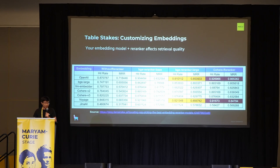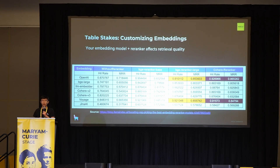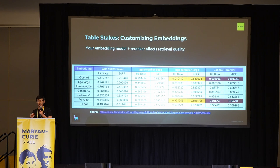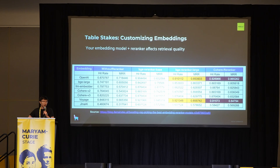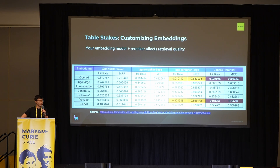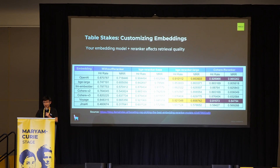Customizing embeddings also matters quite a bit. There's a lot of embedding models out there: OpenAI, BGE, Cohere, Voyage, Gina — a lot of these came out last week or two weeks ago. We measured retrieval metrics over a dataset on a variety of different tasks and also added re-ranking in the columns. You can draw this matrix — the higher the number is, the better — and see which ones fit your cost budget and have the highest performance, measuring it using the retrieval eval metrics mentioned before. Both customizing the LLM and the embeddings have a huge impact on performance.